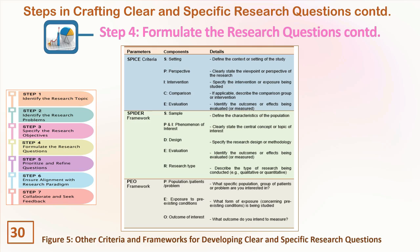Figure five shows other criteria and frameworks. The SPICE criteria comprise the study setting, the perspective of the research, the intervention or exposure being studied, the comparison group involved, and evaluation of the outcome. The SPIDER framework comprises the sample, the phenomenon of interest, the study design, the evaluation, and the research type. The PIO framework comprises the population or patients or problems, exposure to pre-existing conditions, and outcome of interest. These frameworks are commonly used in the social sciences and humanities.